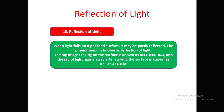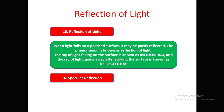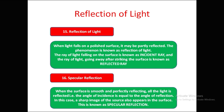Regarding reflection of light: when light falls on a polished or smooth surface, it may be partly reflected — this phenomenon is known as reflection of light. The ray of light falling on the surface is the incident ray, and the ray going away after striking the surface is the reflected ray.